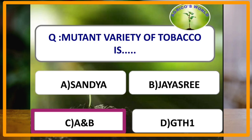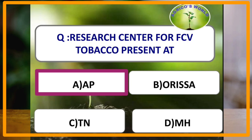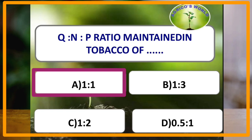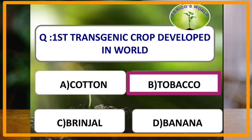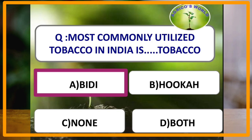The research center for FCV tobacco is present at Rajamandri, Andhra Pradesh. The N to P ratio maintained in tobacco is 0.5:1. The first transgenic crop developed in the world is tobacco, in the year 1983. The most commonly utilized tobacco in India is BD type.